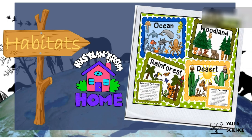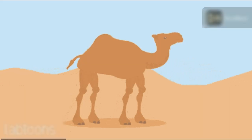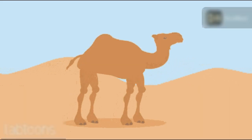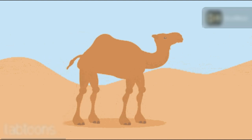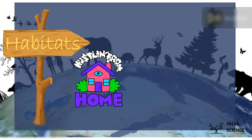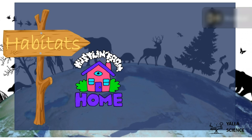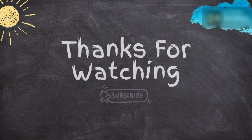The ocean is the sea creatures' habitat. It's like the camel — where does the camel live? It lives in the desert, so the desert is the camel's habitat. Next time we will learn how animals adapt to their habitats.